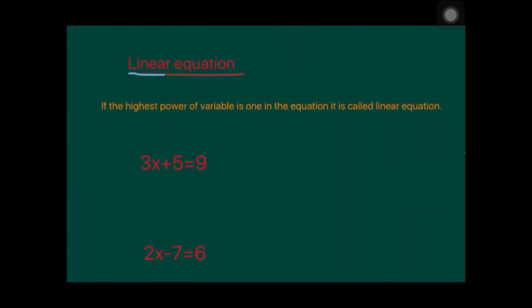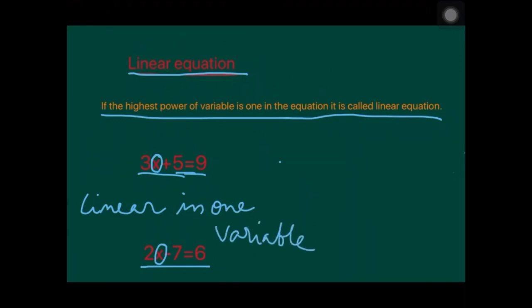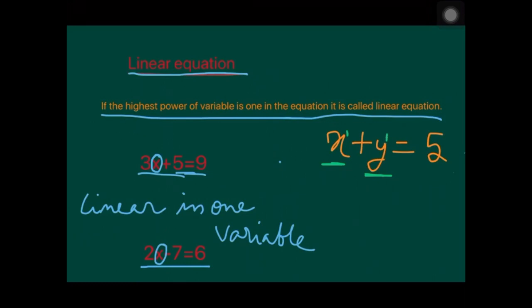A linear equation is one where the highest power of the variable is 1. Examples include 3x plus 5 equals 9 and 2x minus 7 equals 6. In these, there is only one variable, so we say linear equation in one variable. But if we take x plus y equals 5, there are two variables — x and y — both with degree 1, so this is a linear equation in two variables.